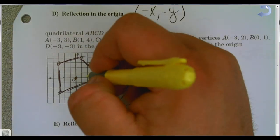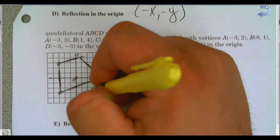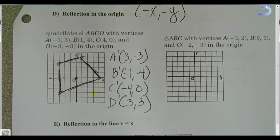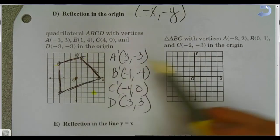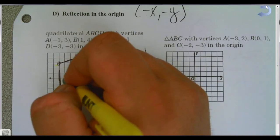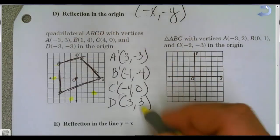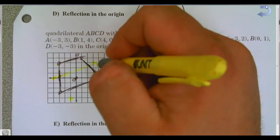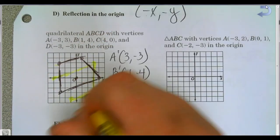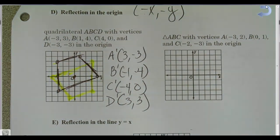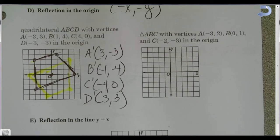So D′ ends up at (3, 3). I plot the points — (3, −3) for A′, then (−1, −4) for B′, (−4, 0) for C′, and (3, 3) for D′ — and I've successfully flipped the shape over the origin. Go ahead and try triangle ABC and check your answer.